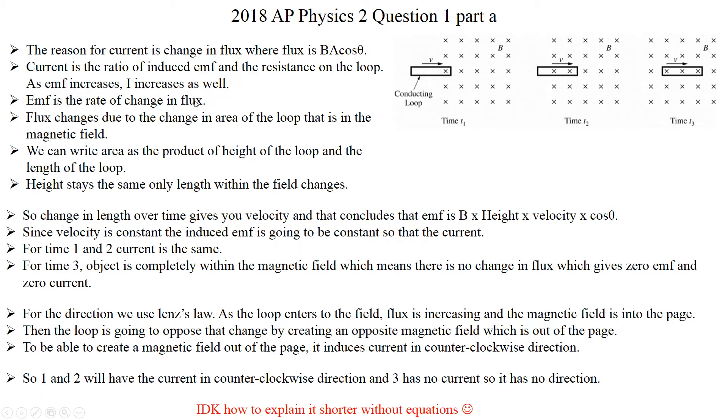So we define EMF as change in flux over time. And if you think about that, flux is also changing due to the change in area. Because right now this enclosed area is going through, it's going to a magnetic field. Through the closed area we have more magnetic fields going through. So that means area is increasing.